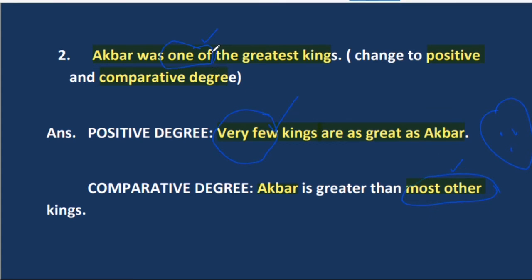In sentences without 'one of,' such as 'Akbar was the greatest king,' there is only one Akbar. In that case, for positive degree we write: no other king is as great as Akbar, and for comparative: Akbar is greater than all other kings. When 'one of' is absent, we use 'no other' and 'all other' — not 'very few' or 'most other.'